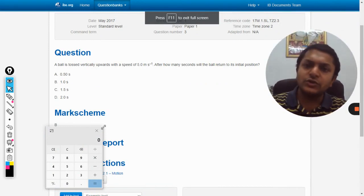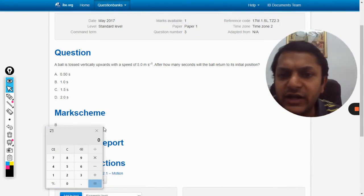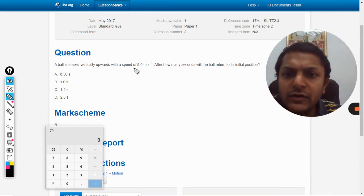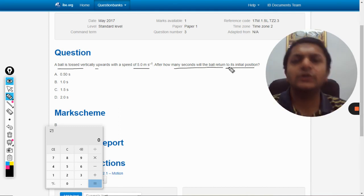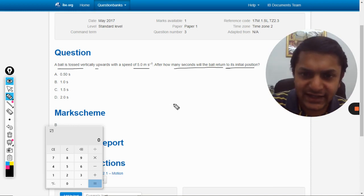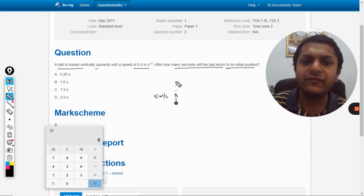Okay, in this question a ball is tossed vertically upwards with a speed of five meter per second. After how many seconds will the ball return to its initial position? So it means there is a ball thrown upwards with a speed of five meter per second.